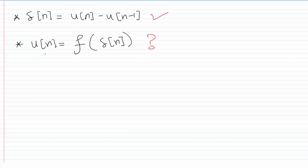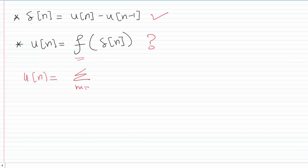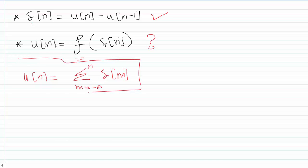The next question is: can you find a function that can be used to write the unit step as a function of the impulse? I'm going to write the answer here and then make an explanation. Yes, we can write u of n as a function of the impulse, and that's this expression — a summation which links the impulse with the unit step.